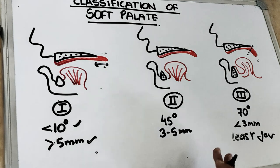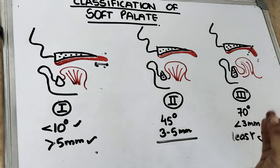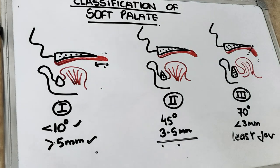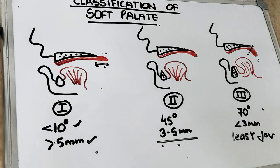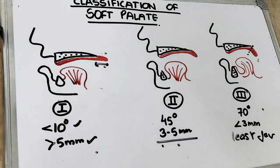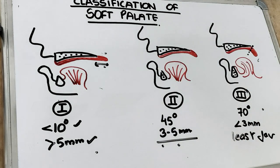Class 2 makes a 45-degree angle with the hard palate, giving a tissue coverage of 3 to 5 millimeters for the PPS — not as good as Class 1, but not as bad as Class 3. Class 3 makes a 70-degree angle with the hard palate, is usually associated with a V-shaped palatal arch, and gives the least tissue coverage, making it least favorable for retention.